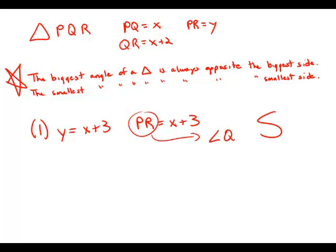Now forget about statement one. Statement two by itself tells us that x equals 2, which means PQ equals 2 and QR equals 4. But given that, we have no idea what y is. Y could be 3, or y could be 5, or something much bigger. So we have no idea which side is the largest, and therefore we don't know which angle is the largest. Statement two is insufficient.